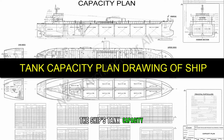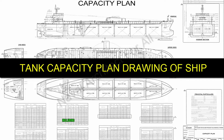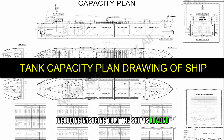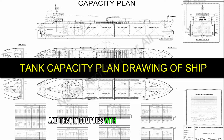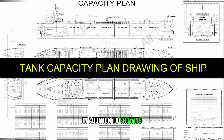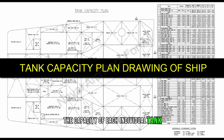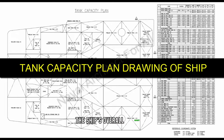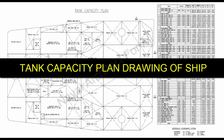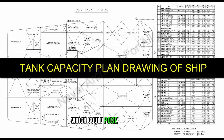The purpose of the Tank Capacity Plan drawing is to provide a clear and accurate visual representation of the ship's tank capacity. This is important for a number of reasons, including ensuring that the ship is loaded safely and efficiently, and that it complies with relevant regulations and standards. The drawing may also include information about the ship's overall capacity, such as its total volume or weight limit, to ensure that the ship is not overloaded, which could pose a safety risk or lead to other operational issues.